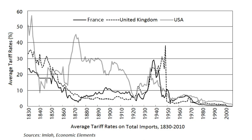Only a few countries on the continent had adopted a truly liberal trade policy before 1860: the Netherlands, Denmark, Portugal, Switzerland, Sweden, and Belgium. The decades that followed were not a period of growth and prosperity, but on the contrary they were likened to the Great Depression.